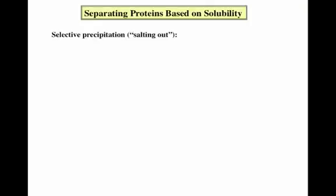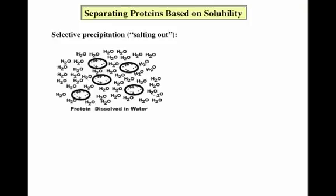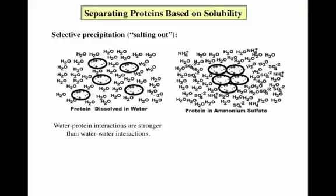We can selectively precipitate proteins from a solution by making them insoluble. The small ovals shown here represent proteins that are dissolved in water. Solubility occurs because the interactions between the water molecules and the proteins are stronger than the interactions between the water molecules themselves, so the water molecules surround the proteins, making them soluble. However, adding ammonium sulfate, a salt, to the mixture makes the proteins clump together and become insoluble, because the interactions of the water with the salt are stronger than with the proteins. As a result, the salt effectively pulls the water away from the proteins, leaving them to cluster together and precipitate out of solution.